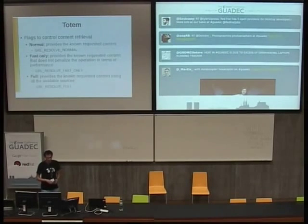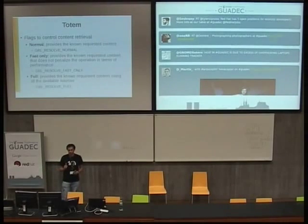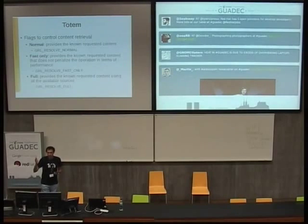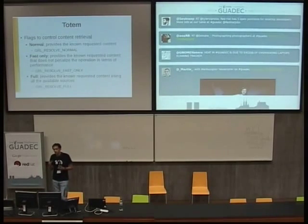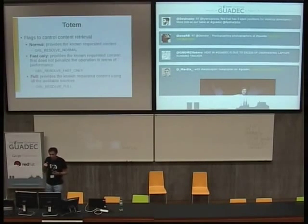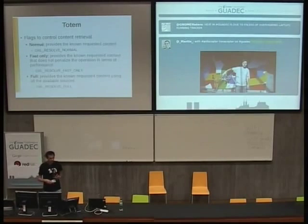The second flag is fast-only. Fast-only is like the normal way, but you're telling the source: if there are some keys that take too much time to retrieve, please don't do it. What counts as 'too much time' depends on the source. Going to YouTube is slower than reading from your hard disk. From YouTube's perspective, getting the URL takes more time because you need at least two requests to the service, whereas other keys only require one request. So to avoid making things too slow, you use this flag.